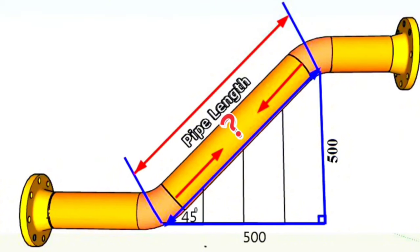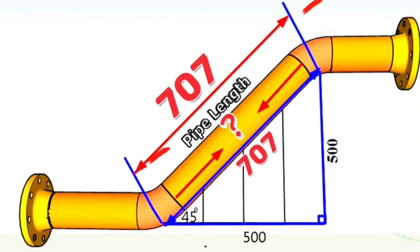The distance from the center of the elbow to the center of the elbow was 707 millimeters. There are two 45-degree elbows here, and if we subtract their lengths from the total distance, we can find the length of the pipe piece.